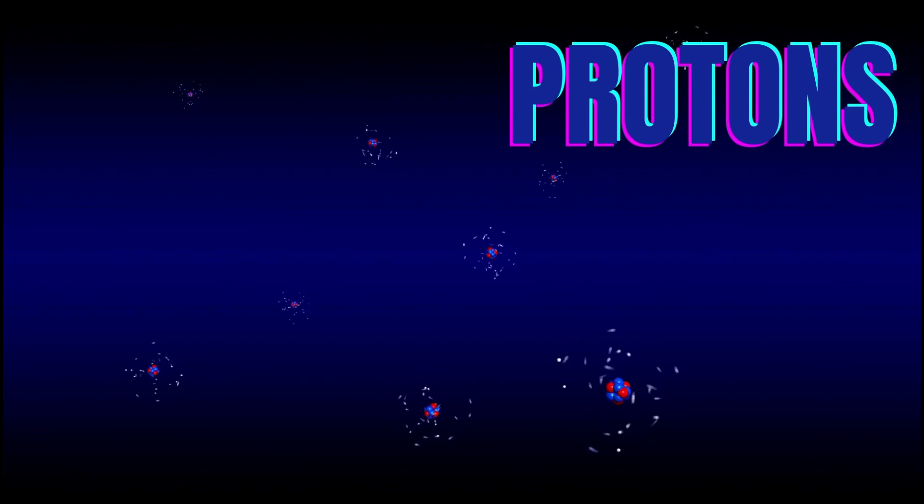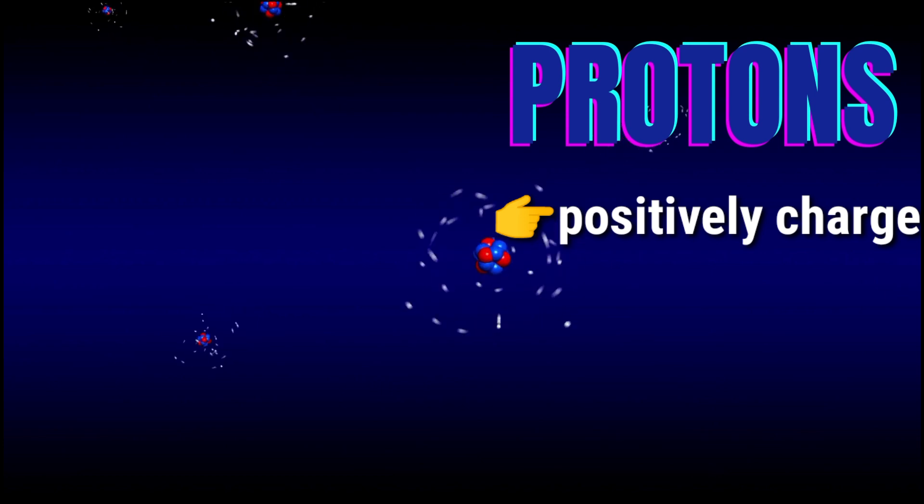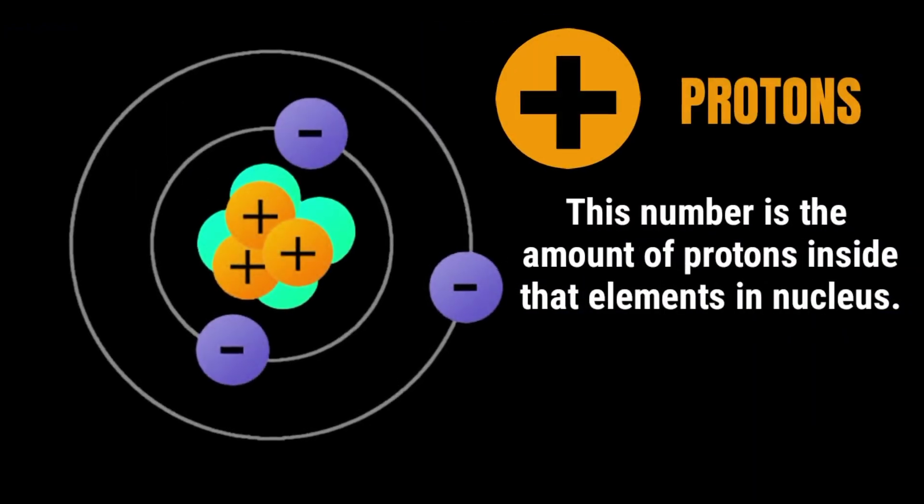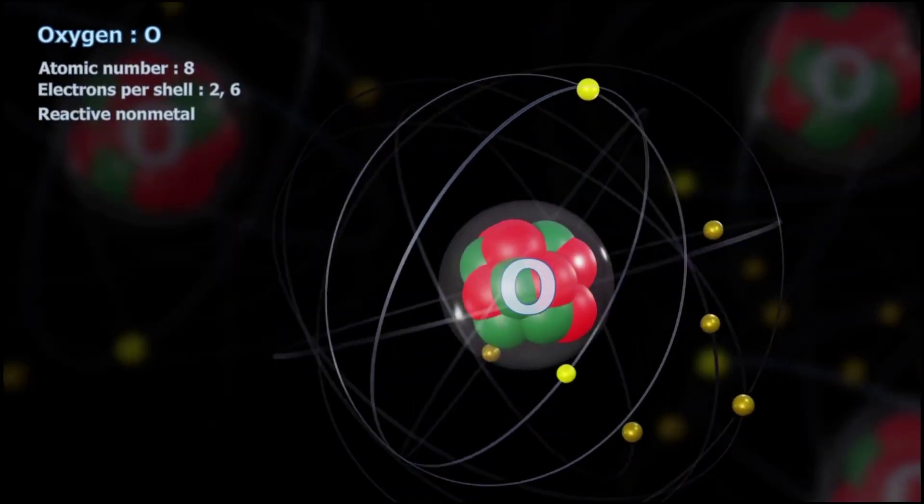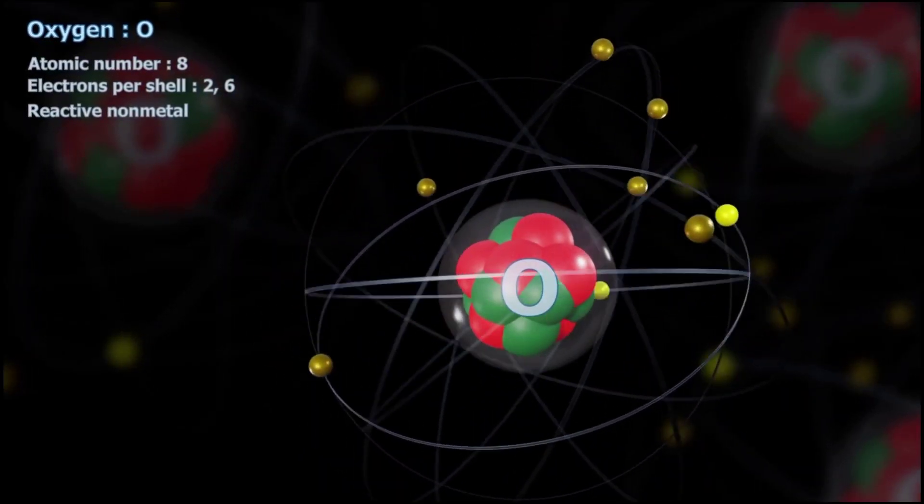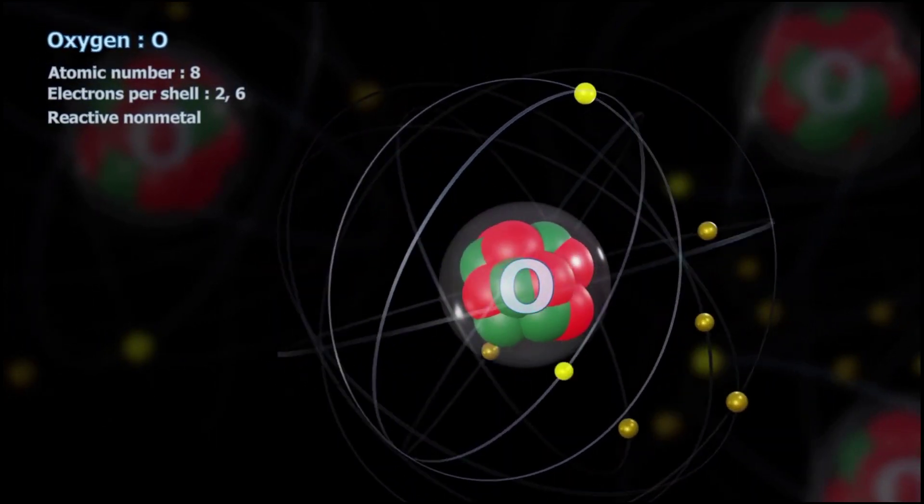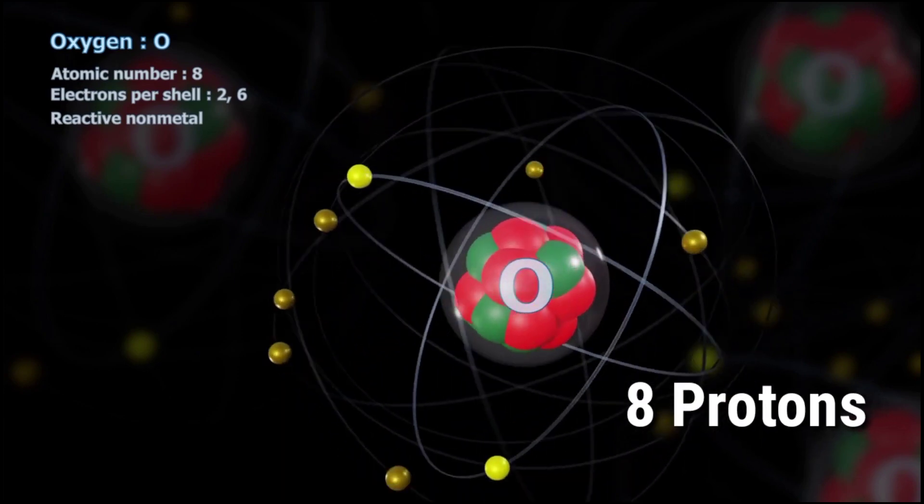Protons are the positively charged particles found inside the nucleus of an atom. Every element has a unique atomic number. This number is the amount of protons inside the element's nucleus. For example, oxygen has an atomic number of 8. How many protons does it have? Yes, you're right. 8.